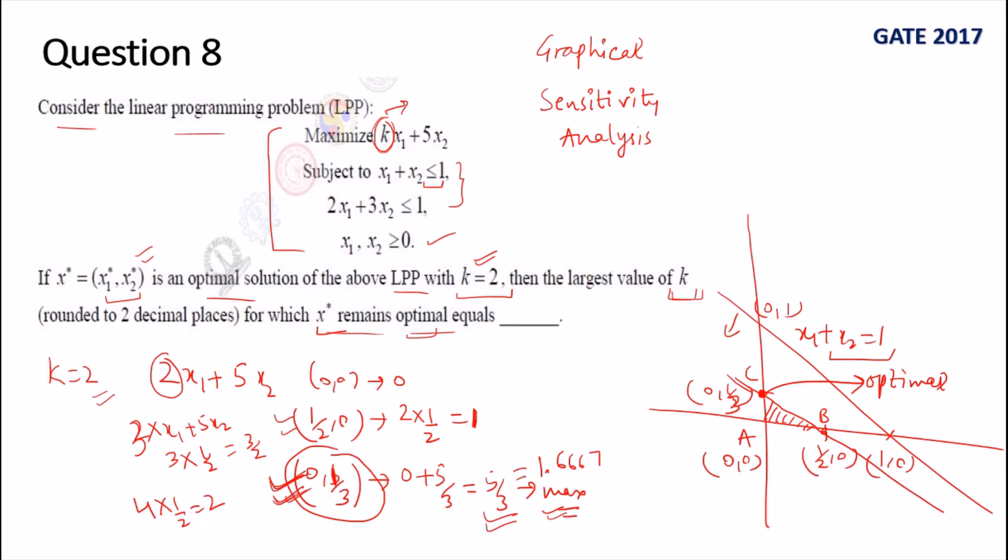We want this solution to remain optimal. For this solution to remain optimal means the value 2*x1 + 5*x2, or we can say k*x1 + 5*x2, at this point should remain less than or equal to 1.6667. That means k*x1 + 5*x2, meaning k × 1/2 + 5 × 0 (because the second point is (1/2, 0)), this value is k/2, so our k/2 should remain less than this. Because if it becomes greater, the other point will become the optimal solution.